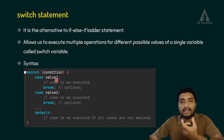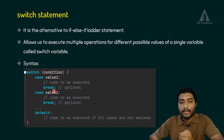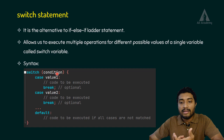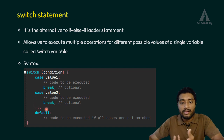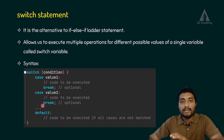If the first case does not match, we check the next case. We use the break keyword after each case. For value2, if the condition matches value2, we execute that corresponding lines of code. We can have an infinite number of cases — n number of cases. There is also a default case, which provides a default line of code to execute.